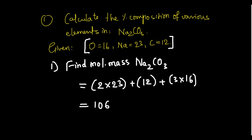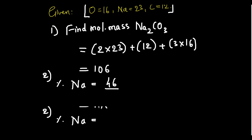Total molecular mass = 46 + 12 + 48 = 106. Next, find the percentage of each element. Percentage of sodium = (total mass of sodium ÷ molecular weight) × 100 = (46 ÷ 106) × 100 ≈ 43.4%.